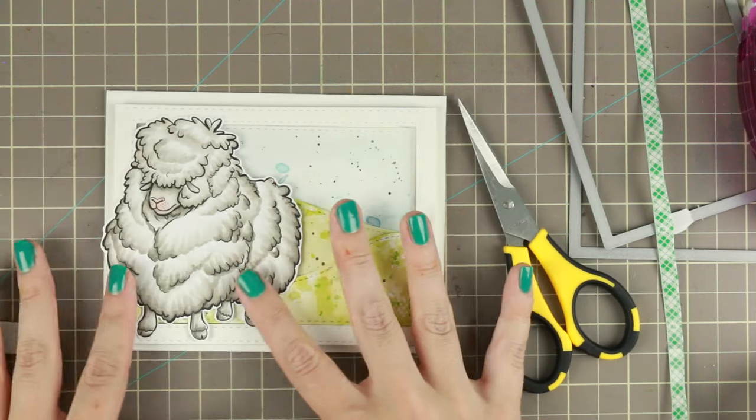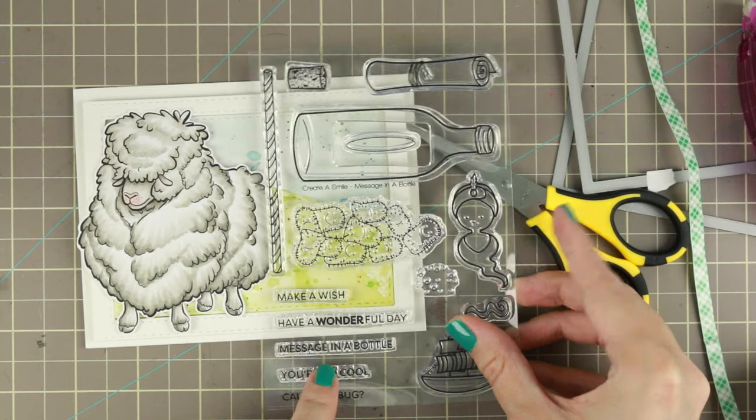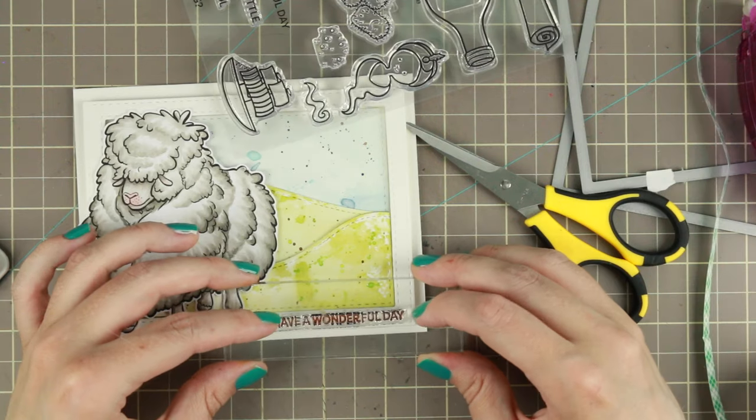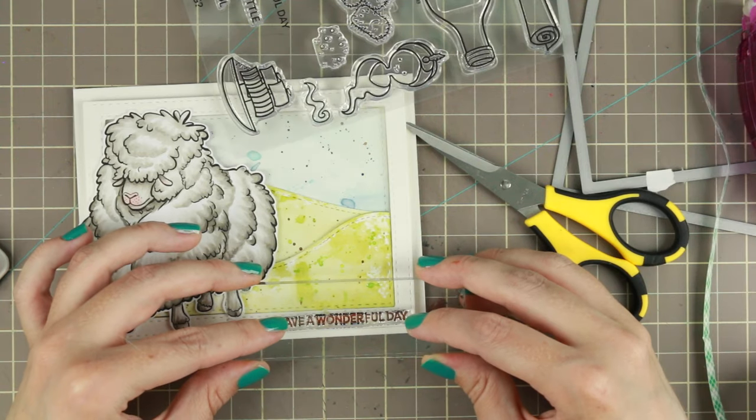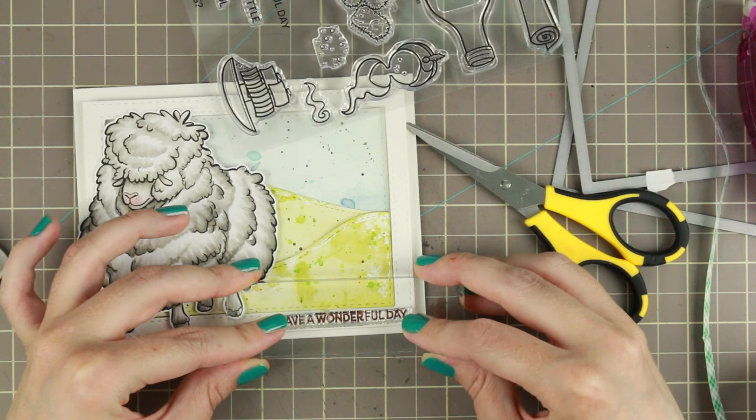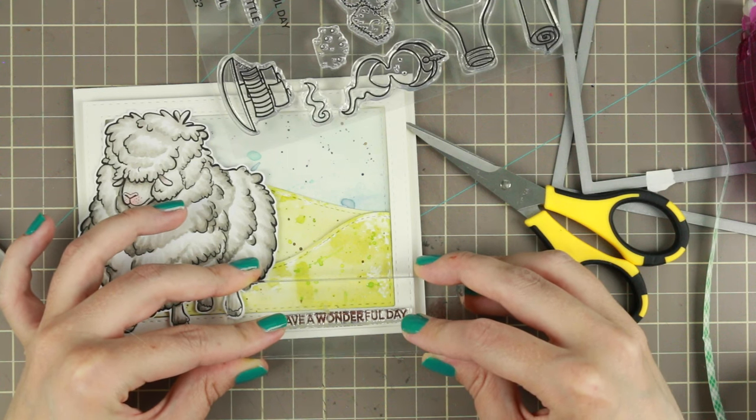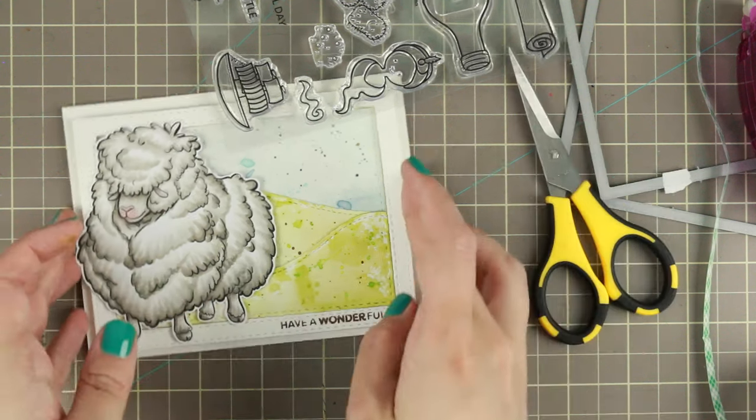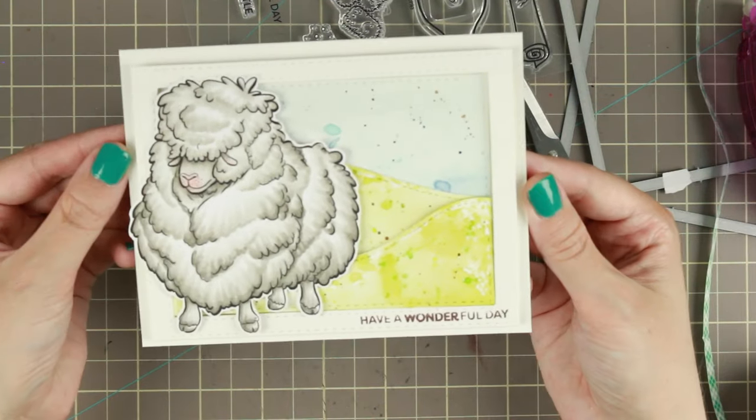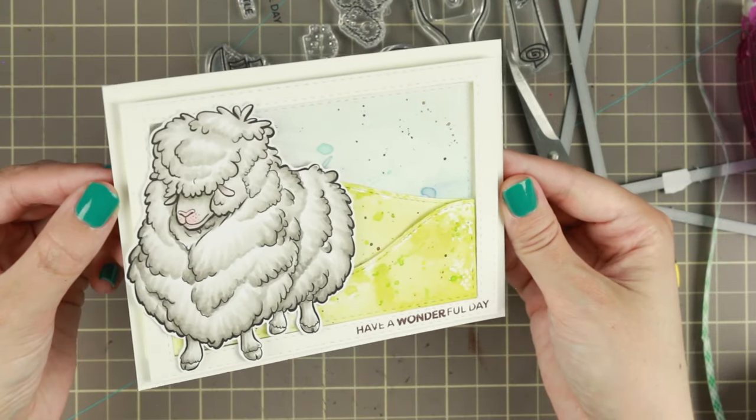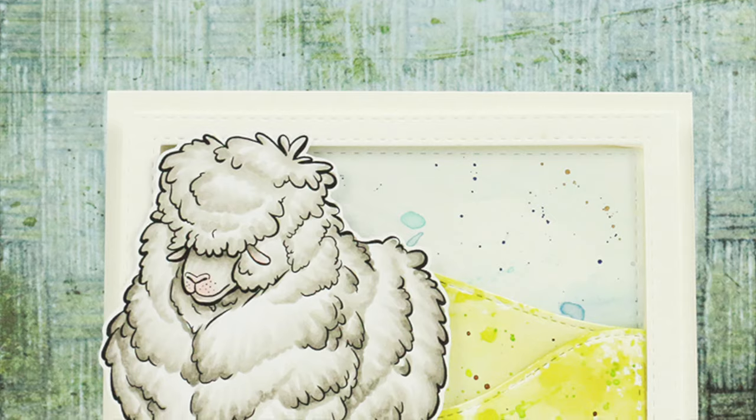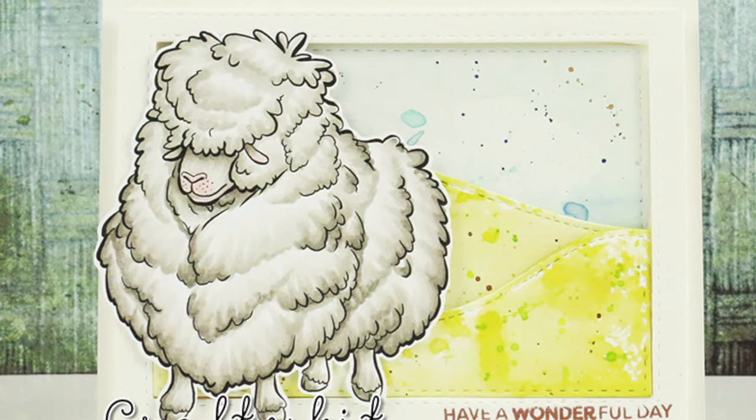I added the frame on double foam adhesives and then I added some foam adhesive just to the parts where the sheep touches the sky and the back hill so it doesn't build too much. For the last touch, I'm adding a little have a wonderful day sentiment from a Create a Smile stamp set, which I should have stamped before putting this together. So the stamp isn't perfect, but it doesn't have to be. It's handmade.